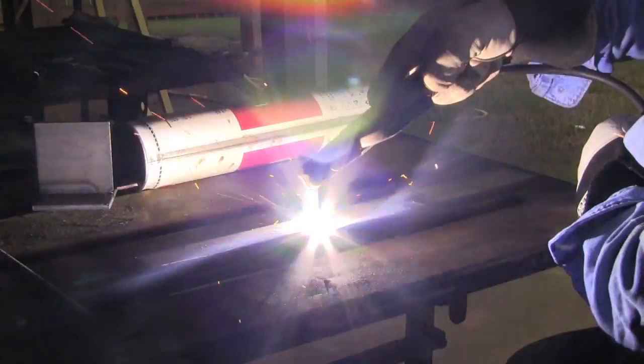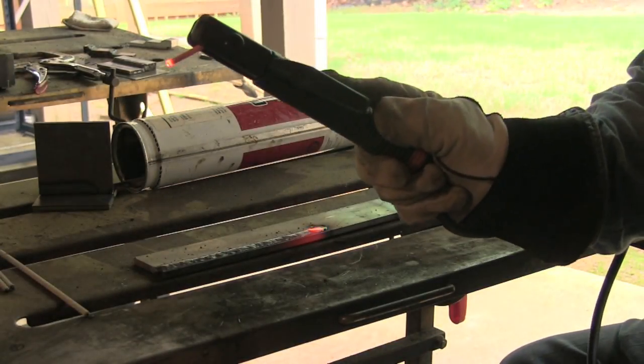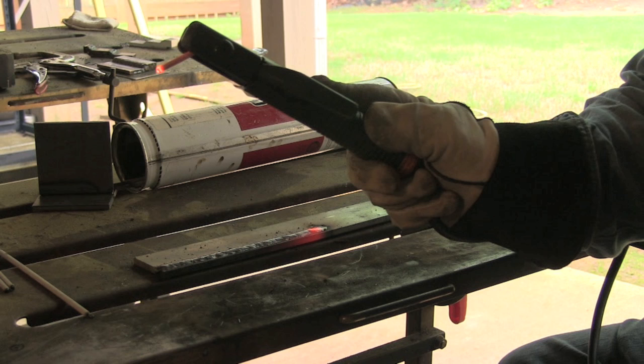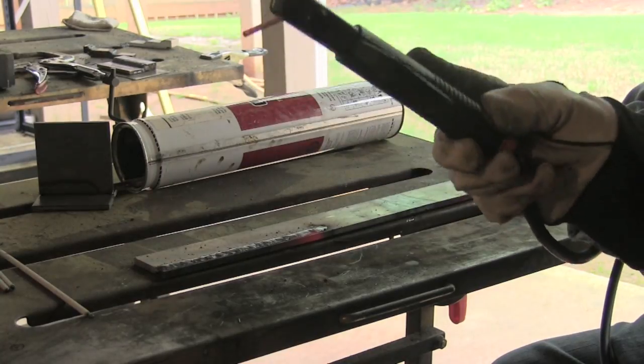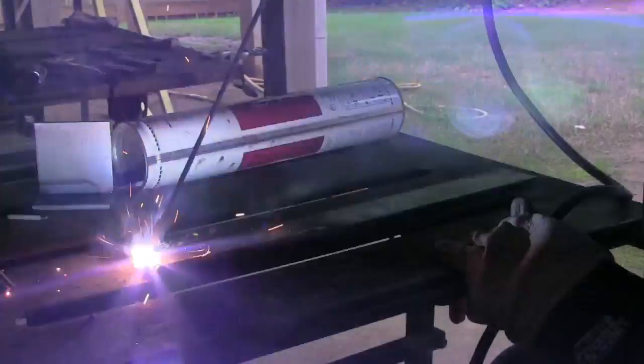I'm going to run the whole rod out because I want to show you something. When you burn a whole 3/32 rod and you see it starting to be glowing red, you're at the high end of what you should run. You're close to 90 to 100 amps when it's glowing red like that.